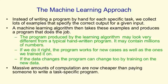Now, massive amounts of computation are cheaper than paying someone to write a program for a specific task. So we can afford big, complicated machine learning programs to produce these task-specific systems for us.